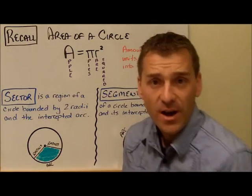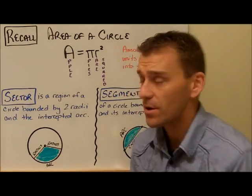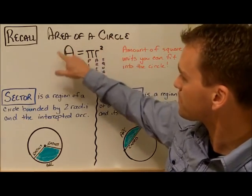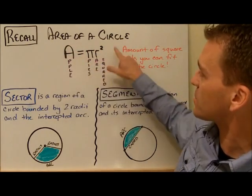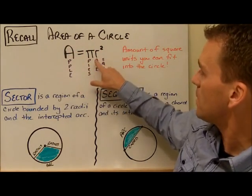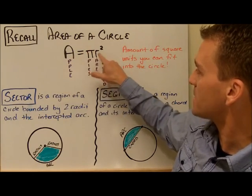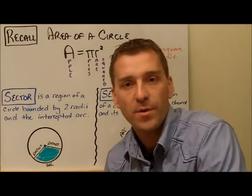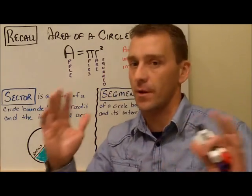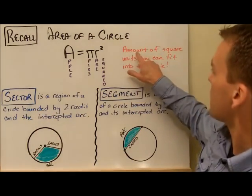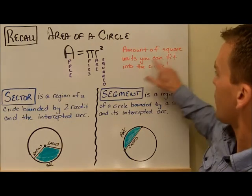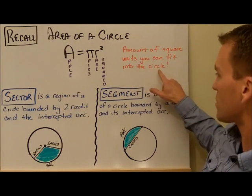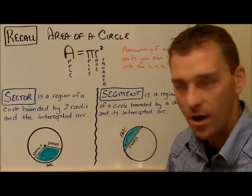So let's go to this. Recall, the area of a circle formula is just apple pies are squared. A equals pi times radius squared. And remember, when we talk about area, whether it be of a rectangle, any type of a polygon, it doesn't matter. It is the amount of square units you can fit into the circle or the region.